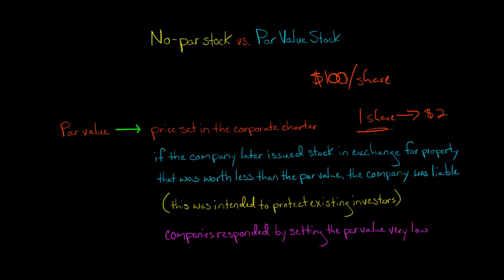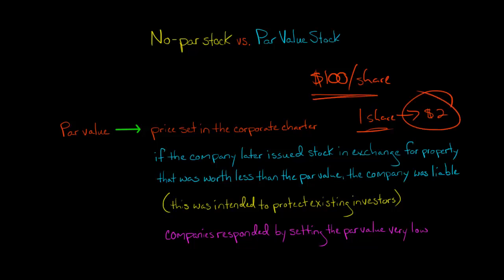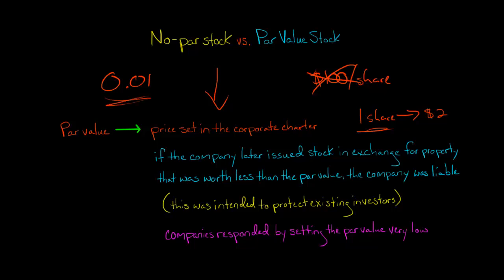At that time, if a company issued a share in exchange for something worth less than the par value, the company would incur a liability. So companies said: we don't want to get hit with a liability — we want to be able to issue new shares if we need to without worrying about a liability. So what they did was set the par value as low as possible — maybe one cent per share. They basically deliberately set the par value very low.